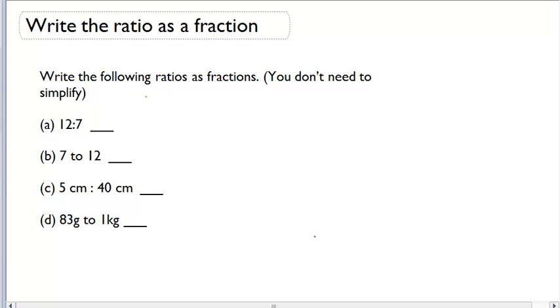Alright, so I can do that by writing 12 over 7. For part B, same thing. 7 to 12, I can write as 7 over 12.